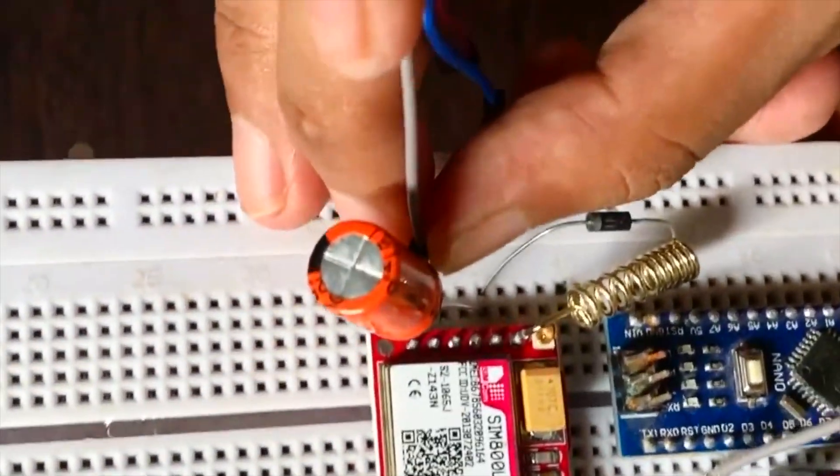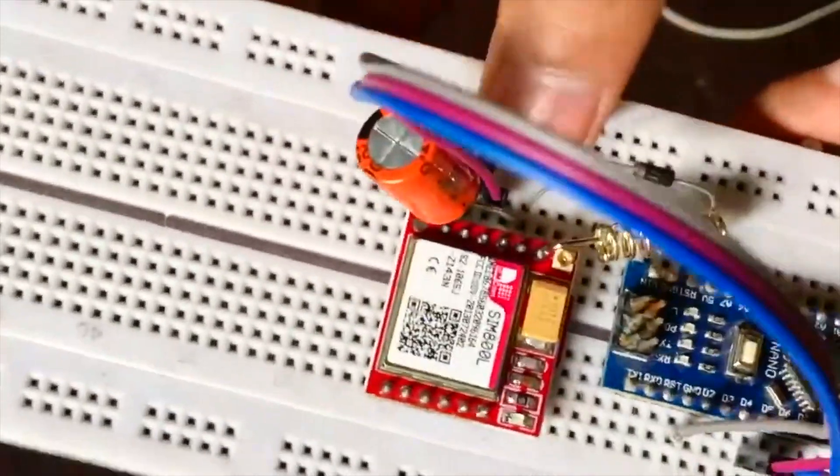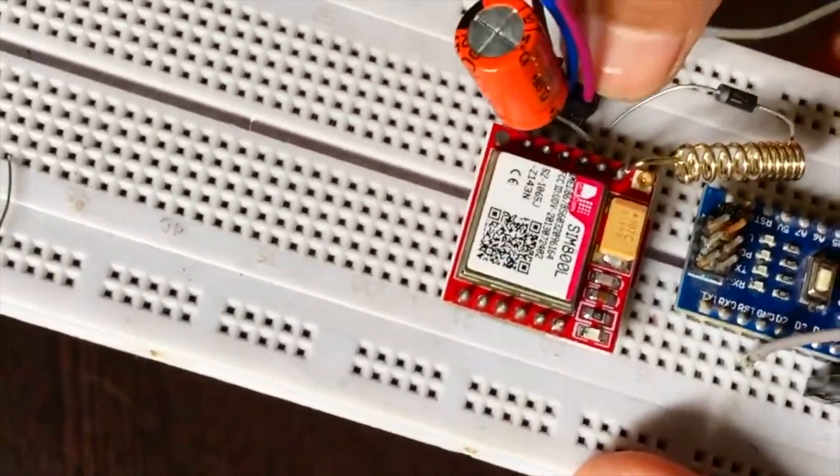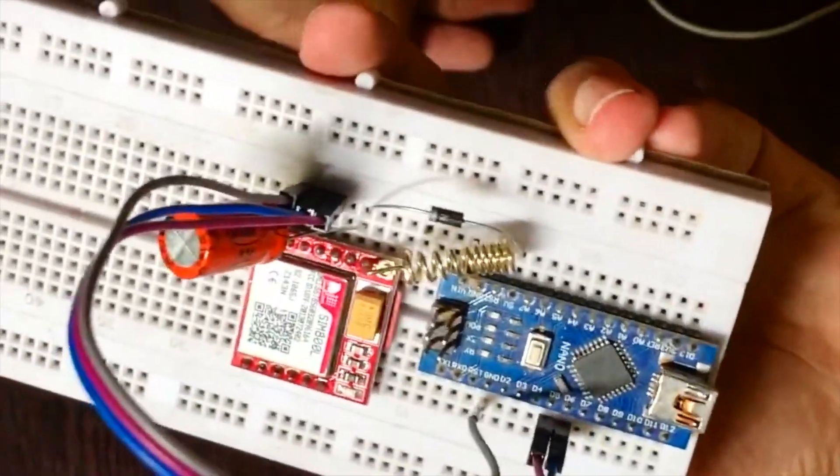Now connect the ground to the ground of the GSM module. Also connect pins 5 and 6 to the RXT and TXT respectively. That's pretty much how the connection is. That's simple, right?